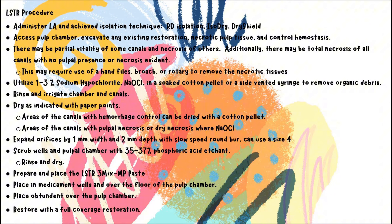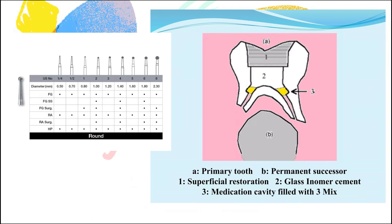This phosphoric acid etching is to open up any tubules and also the cribriform-like structure of the pulpal floor in a pediatric tooth. Then the LSTR 3-mix paste is prepared and placed over the wells and floor of the pulp chamber. A material such as IRM or glass ionomer cement is used to cover the pulp chamber, and a full-coverage restoration is placed over the prepared tooth. This diagram shows the primary tooth, permanent successor, superficial restoration — usually a stainless steel crown — the glass ionomer cement covering the medication, and the wells where the 3-mix paste is placed. A chart demonstrates the diameter in millimeters of the different sized round burrs that can be used to make wells; I typically use a number 4 slow-speed round burr.